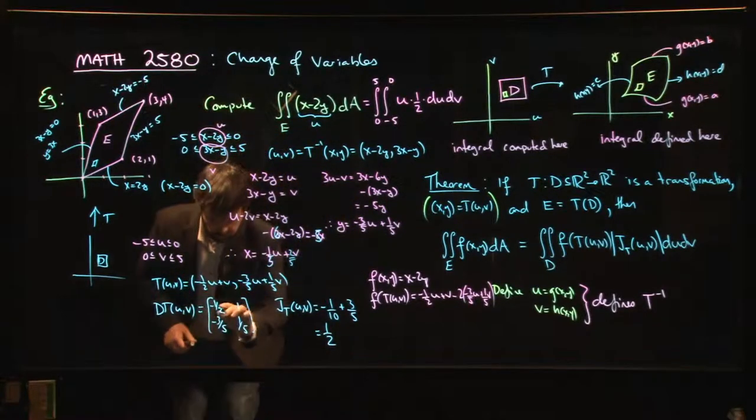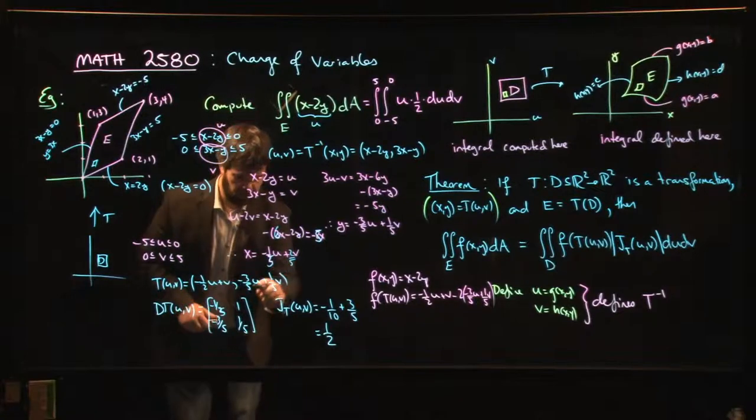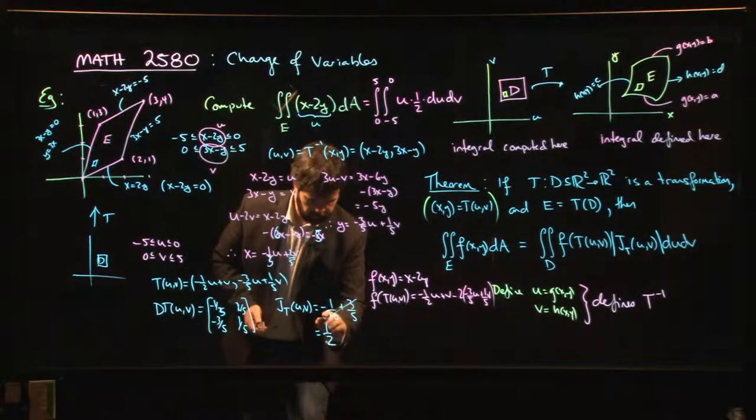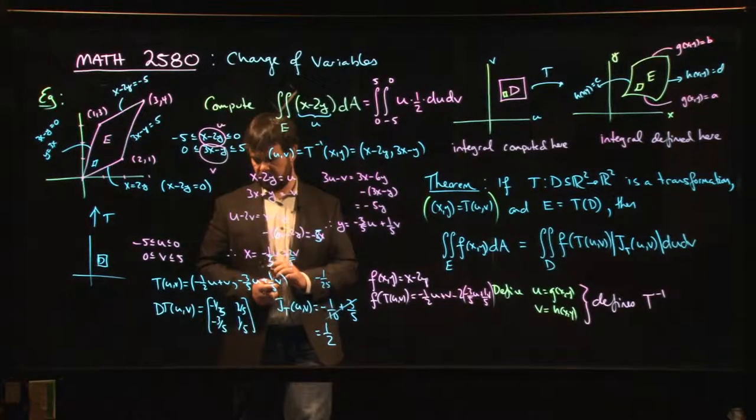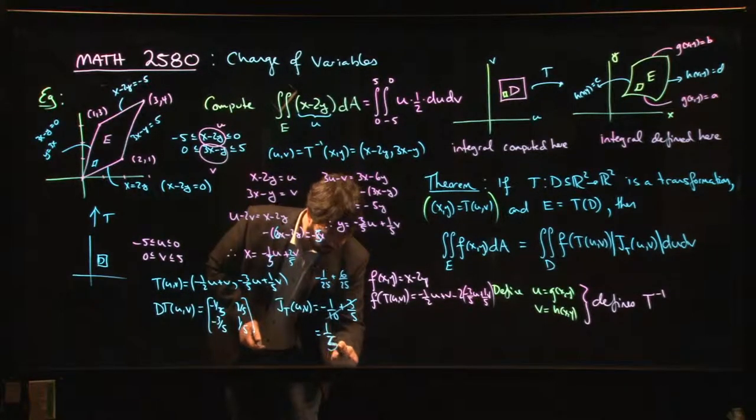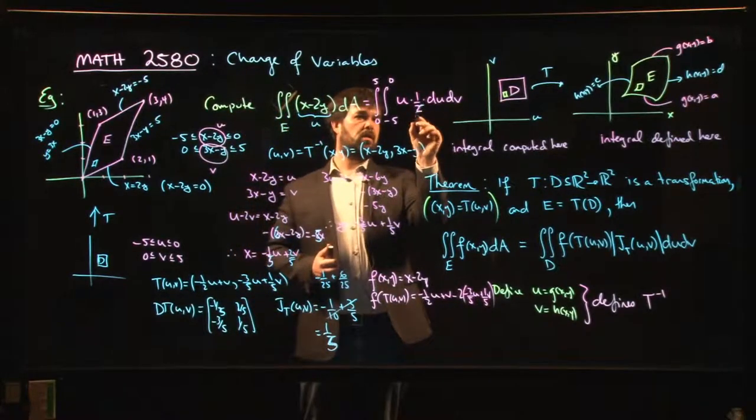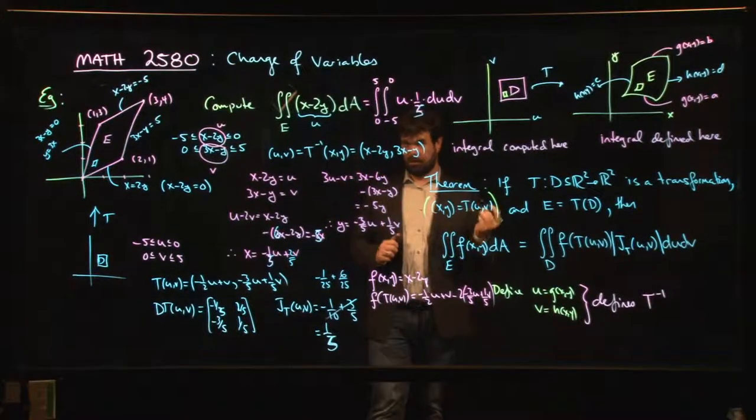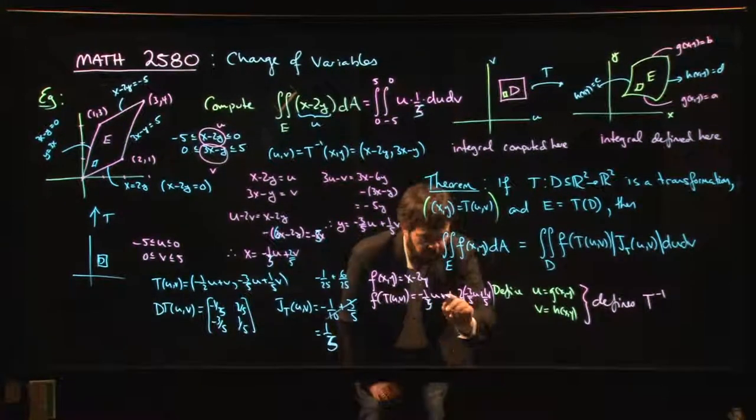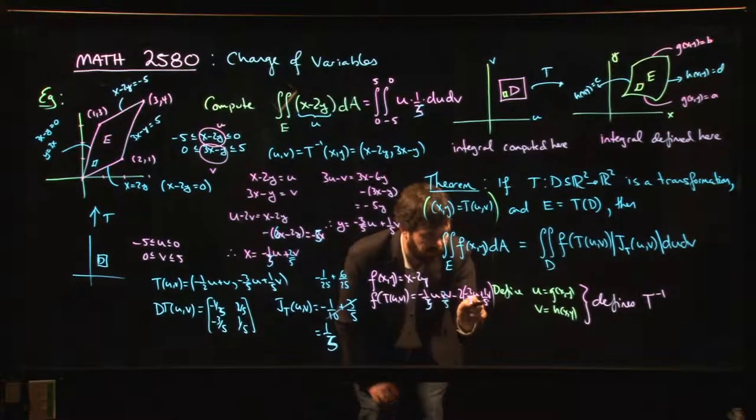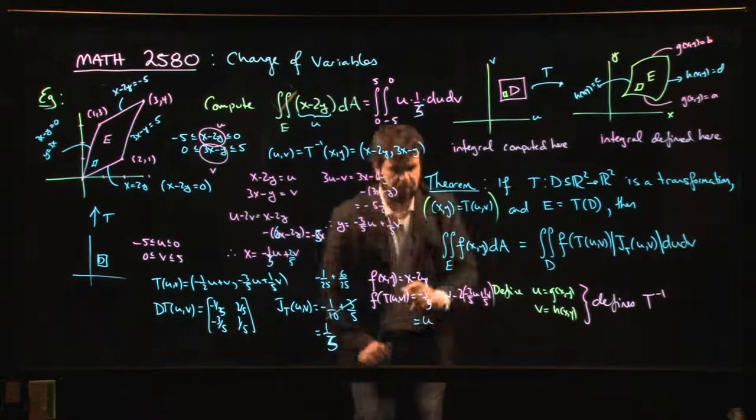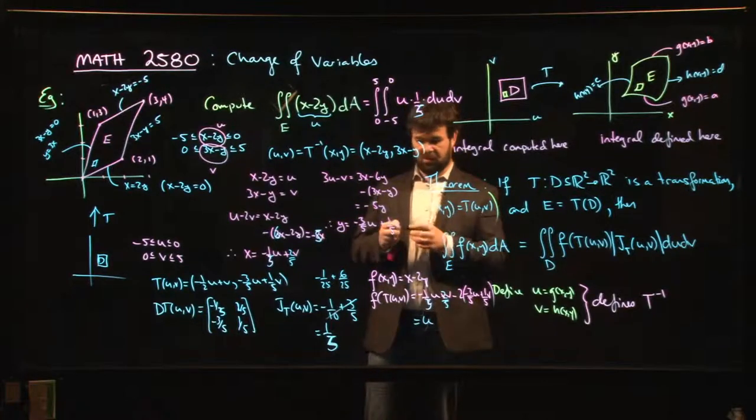So this minus 2 should have been a minus 5. So this should have been a minus 1/5, that should have been a 2/5. That's going to change things down here. So now this is going to be minus 1/25 plus 6/25, so 5/25, so 1/5. Yeah, so minus 1/5 and 2/5. And now you can see that, yes, 2/5 v minus 2/5 v cancel, 6/5 u minus 1/5 u gives you u, as you would expect. You should be reasonably concerned if you don't.